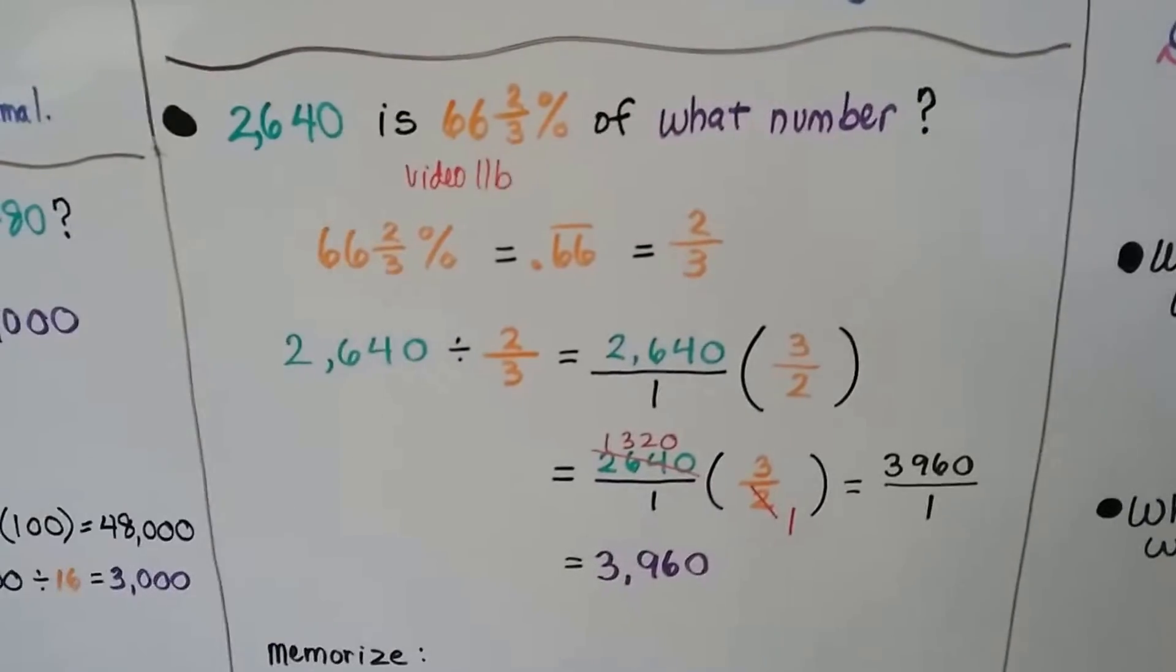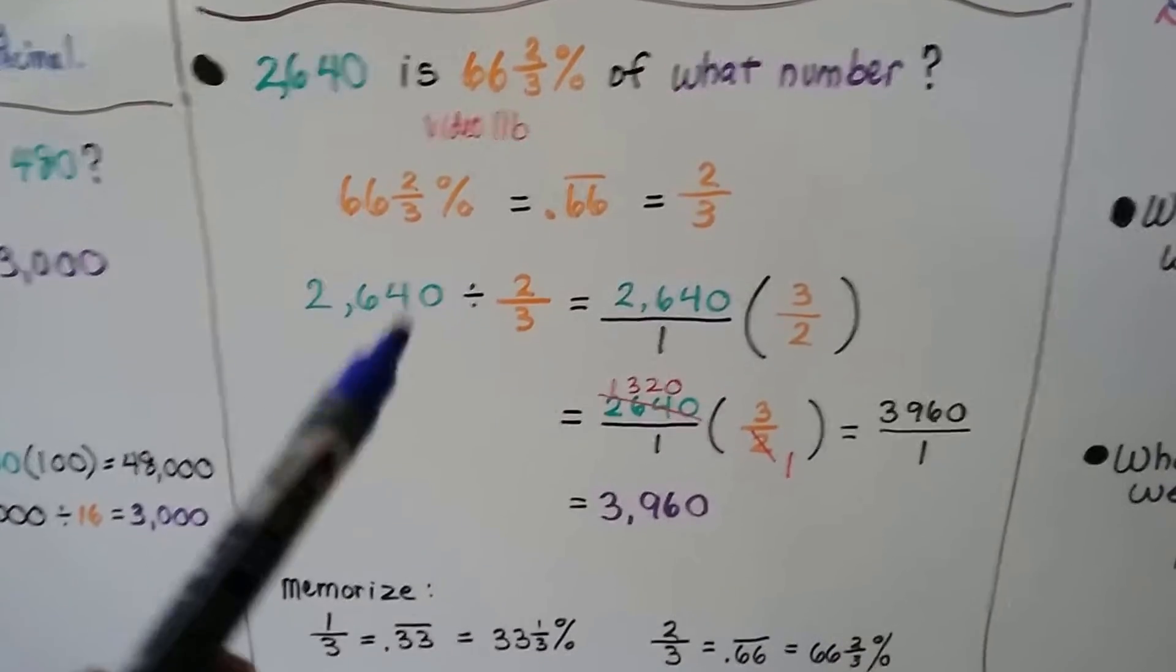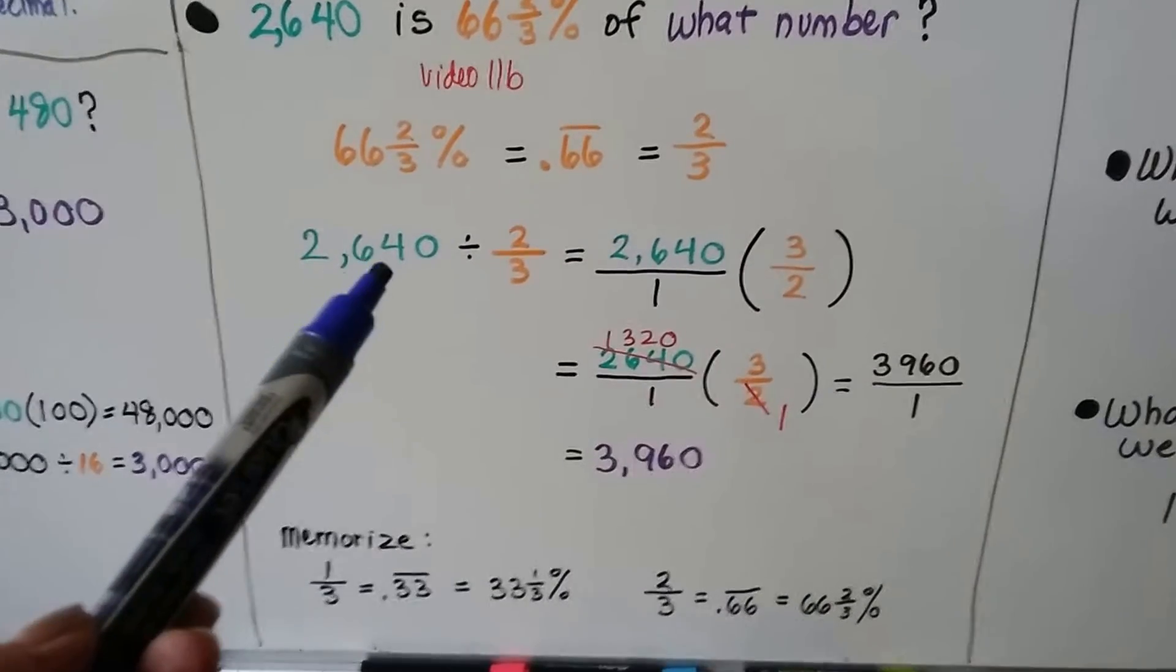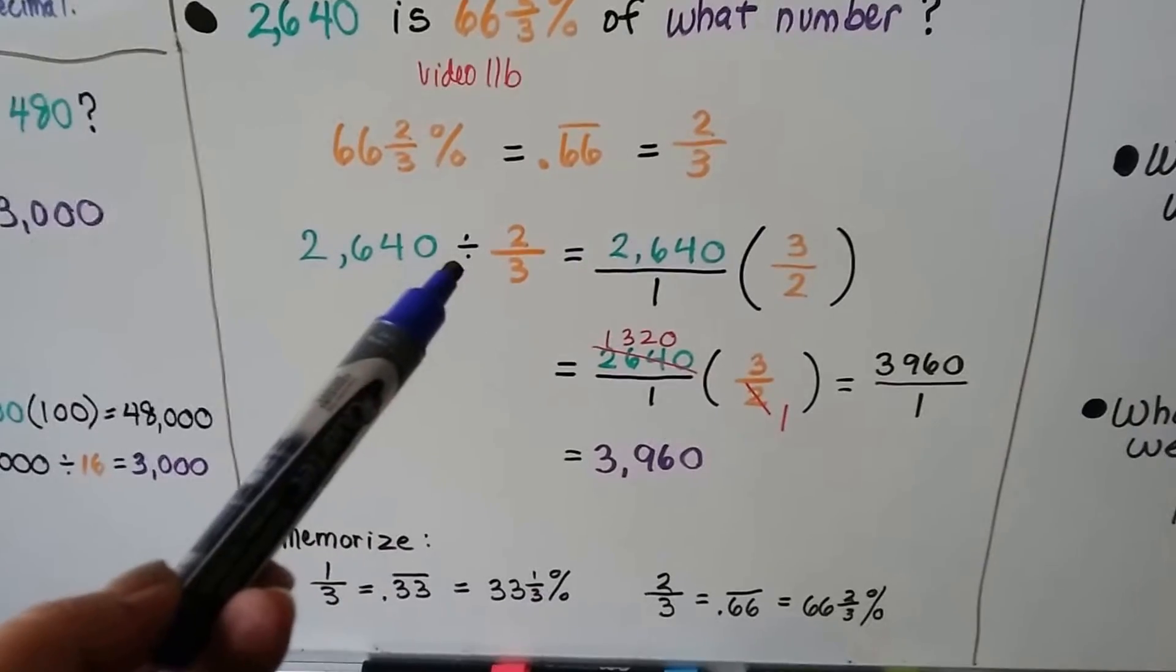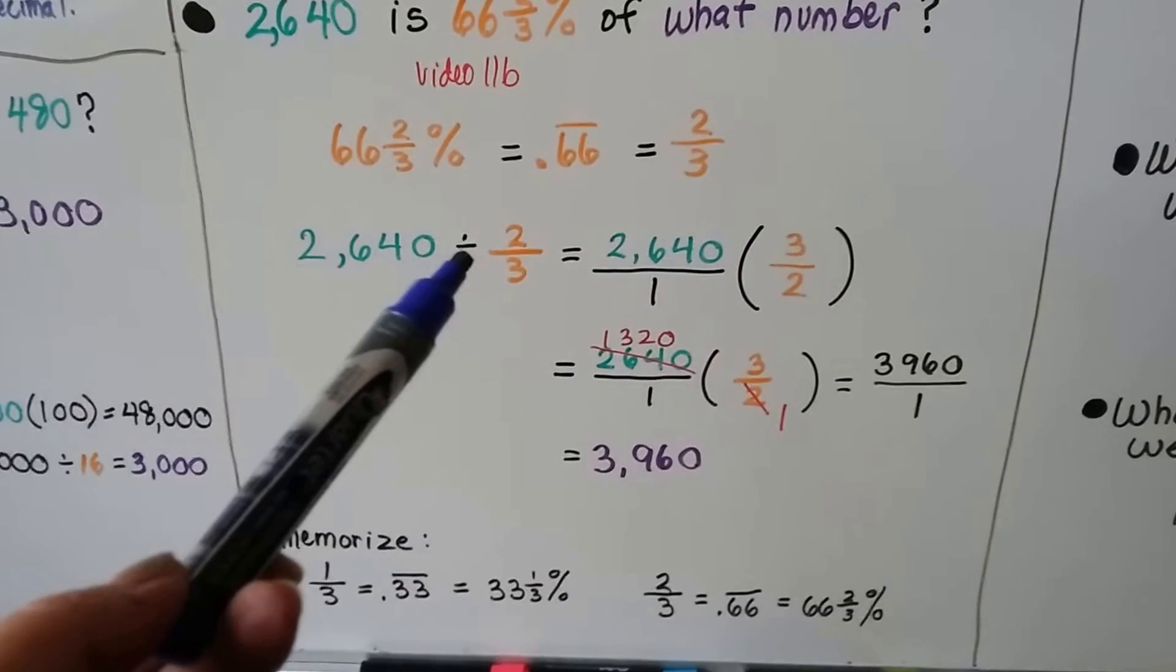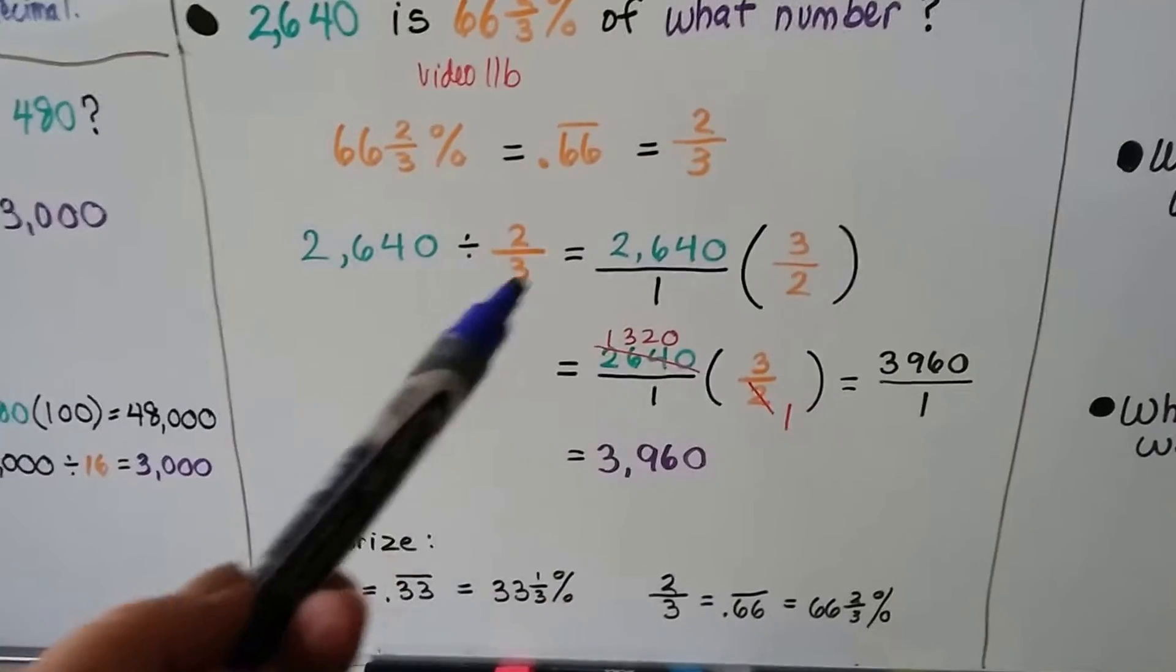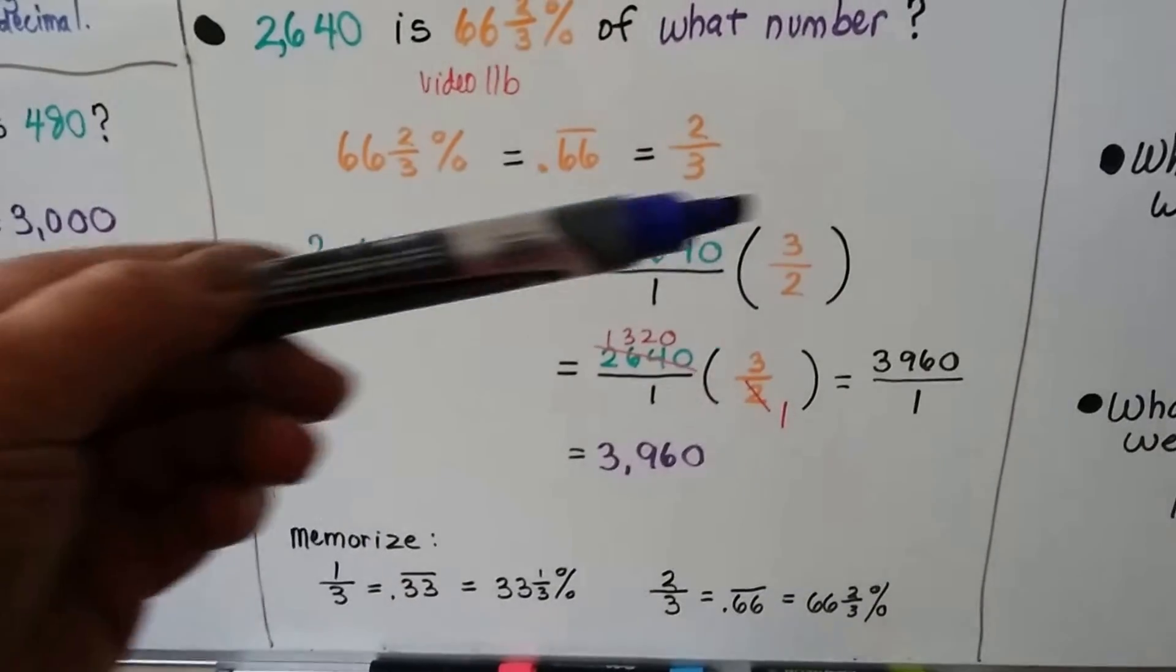We turn the 66 and two-thirds percent into a decimal or a fraction. And in this case, it's actually easier to use it as a fraction. To do 2,640 divided by two-thirds, that division sign, we learned, turns into multiplication. That's what the parentheses next to it means. And we flip this around to its reciprocal of three halves.